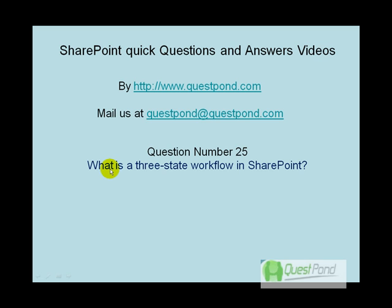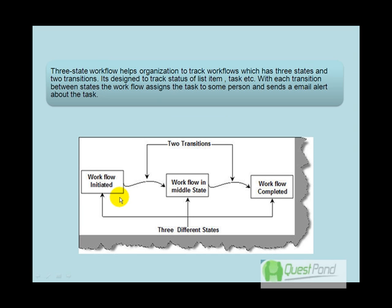The three-state workflow is a free workflow because it comes with WSS. In a workflow, there are two important concepts: states and transitions. As the name suggests, the three-state workflow has three states and two transitions. If your workflow requirement has exactly three states and two transitions, then the three-state workflow is the right choice. It is ready-made and comes free with WSS.